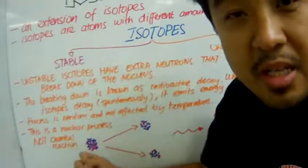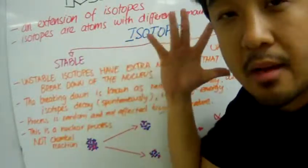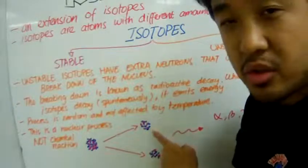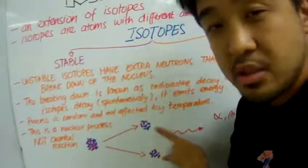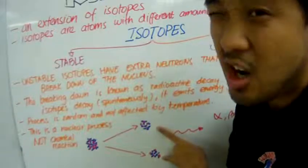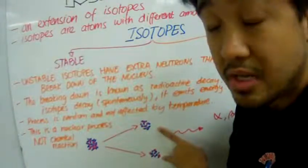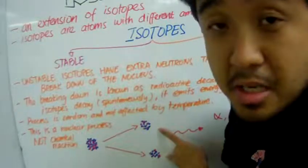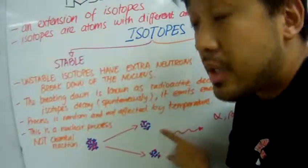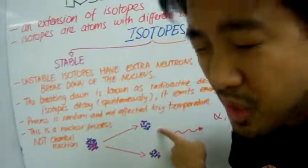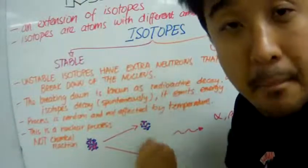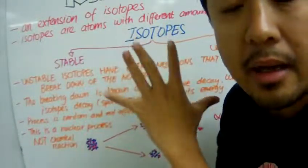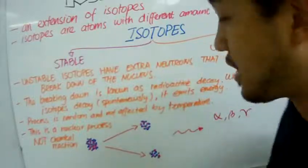And then, spontaneously, it breaks down. And it breaks down into two smaller nuclei. These are daughter nuclei. And these daughter nuclei could be stable or unstable. If it's stable, it stays there. If it's unstable, it will break down again and undergo more radioactive decay.